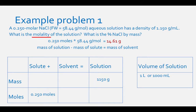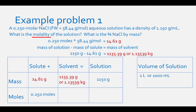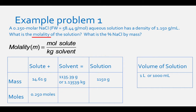To find the mass of the solvent, subtract mass of solute from mass of solution: 1,150 g − 14.61 g = 1,135.39 g, or 1.13539 kg. To find molality, divide moles of solute by kilograms of solvent: 0.250 mol ÷ 1.13539 kg = 2.20 molal.